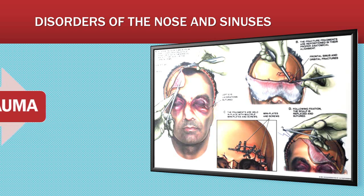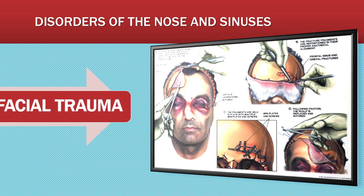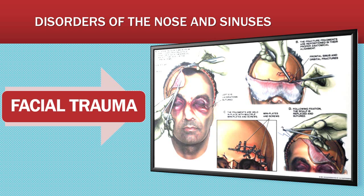Facial trauma is described by the specific bones that are injured. This includes mandibular trauma, maxillary trauma, orbital trauma, nasal fractures, and the side of the face. Whatever part of the face is fractured describes the trauma.